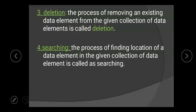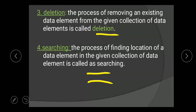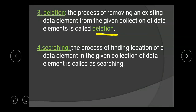Third is deletion — the process of removing an existing data element from the given collection of data elements is called deletion. For example, if we have a student record with student name, student age, and student marks (added via insertion), and we want to remove student marks, we use the deletion operation.